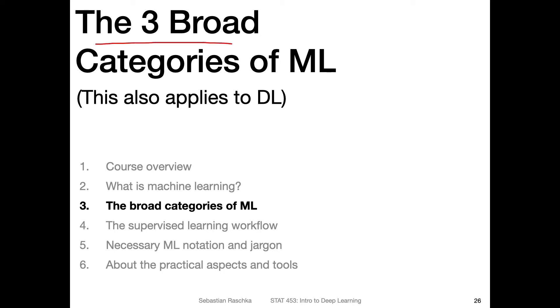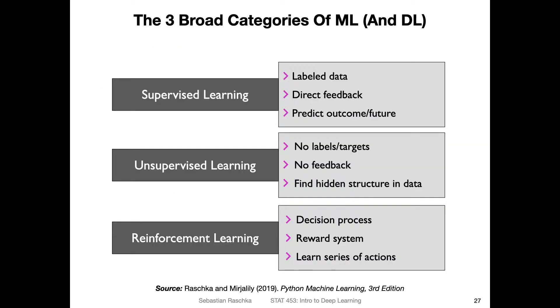Let's now talk about the three broad categories of machine learning. The three broad categories of machine learning are supervised learning, unsupervised learning, and reinforcement learning.